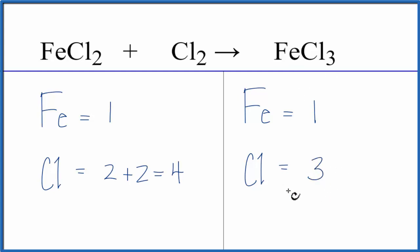Whenever I have an odd number like this, I like to get that to an even number, and I can do that by multiplying by two. So if I have a coefficient of two in front of the FeCl3, three times two, that'll give me six.